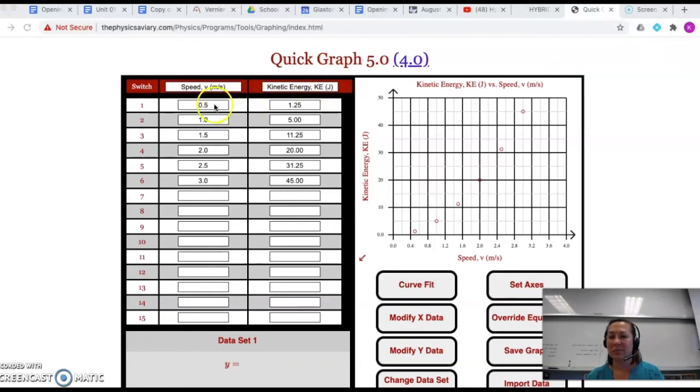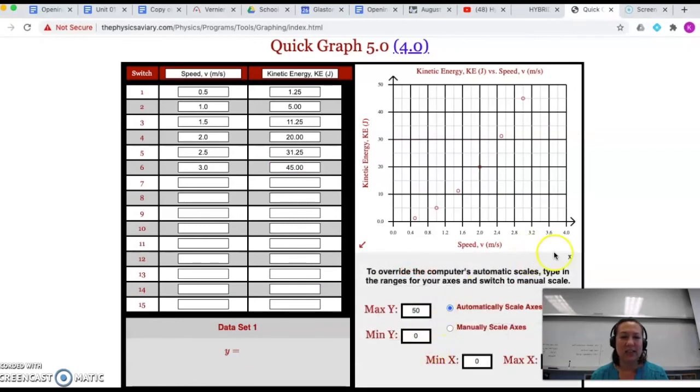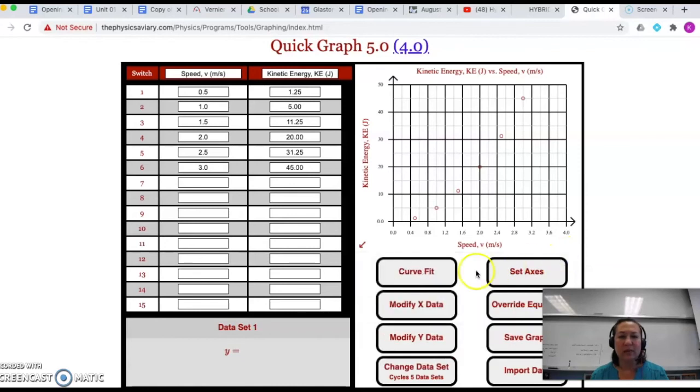I would take my speed and enter each value. In this case, speed changes the amount of kinetic energy you have. Evidently, the more speed an object has, the more energy it has. And when we graph, I get a plot that automatically labels the x and y axes. If I want to change the axes for any reason, you can go to set axis. But in this case, I do want to see all my data sets.